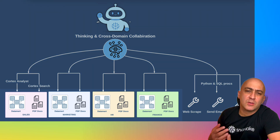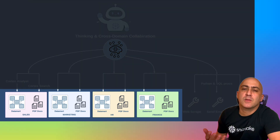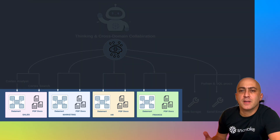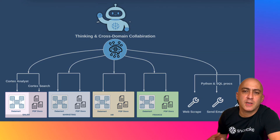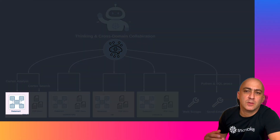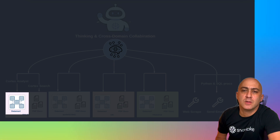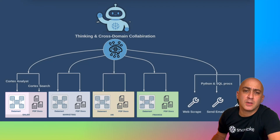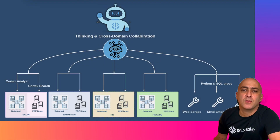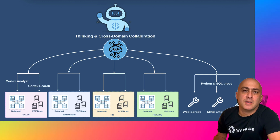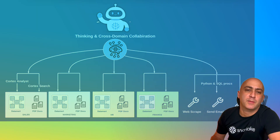What we have is your typical sales, marketing, finance, and HR domains, each with its own datamart that includes fact and dimensional tables, but also comes with a repository of departmental documents such as PDFs and PowerPoints, just like an employee handbook or a marketing budget plan.